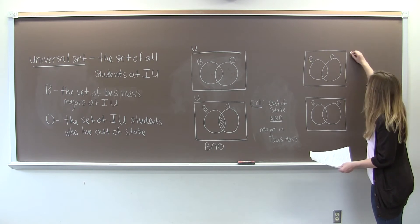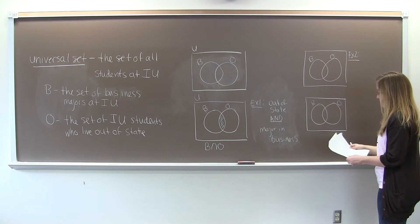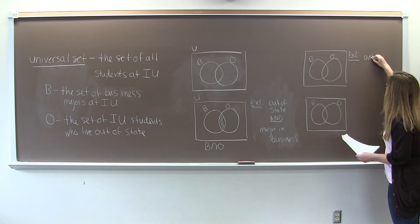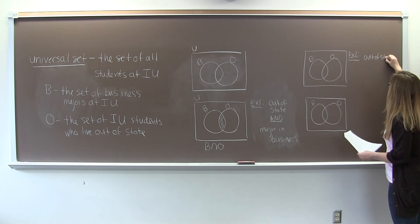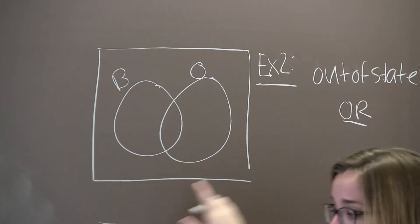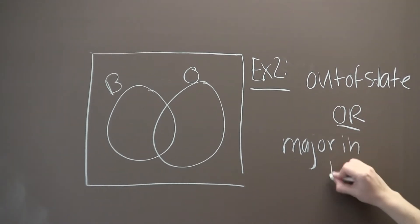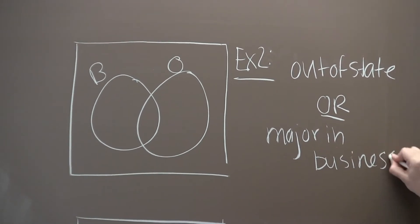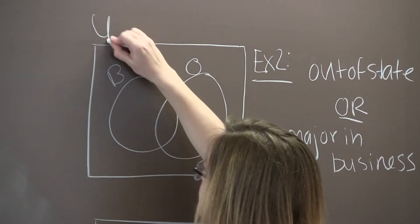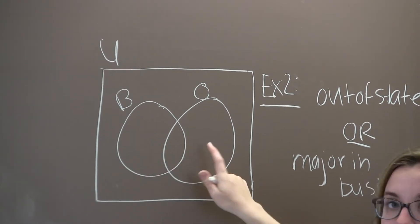Okay, so let's do another example. So this time we'll consider the set of students who live out of state or, that's the only difference from this one, or want to major in business. So let's go through region by region of our Venn diagram. Anybody who lives out here, there's kind of four regions here. This, this, this, and this. So let's talk about each one.